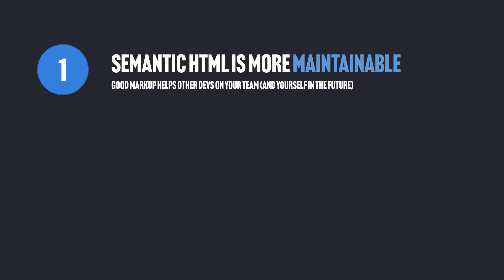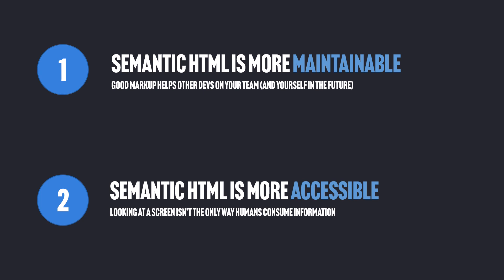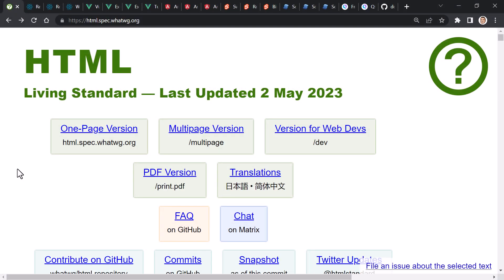If devs write good semantic HTML, components are much more maintainable. Good markup helps other devs on your team to understand what's going on in the templates of your components, and helps yourself in the future when you come back to a component months or years later. And, of course, good quality markup is much more accessible automatically. As devs, we need to remember that we're not just trying to match visually some prototype, but providing a way for humans to consume the information in various ways — we want it to be accessible. So, using the HTML specification as our guide, let's take a look at a few examples inside the documentation sites of these various frameworks and libraries, and we'll rate them to see who wins the markup matchup, the semantic showdown.